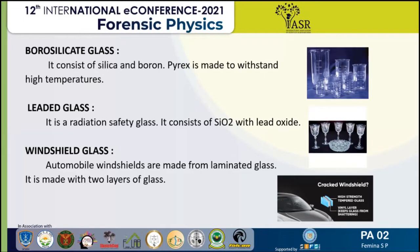Windshield glass: automobile windshields are made from laminated glass. Today, windshields are made into two layers of glass with a high-strength vinyl plastic film such as polyvinyl butyral sandwiched in between the layers. The three pieces are laminated together by applying heat and pressure in a special oven called an autoclave. This type of glass is ideal for automobile windshields because of its strength and shatter resistance.